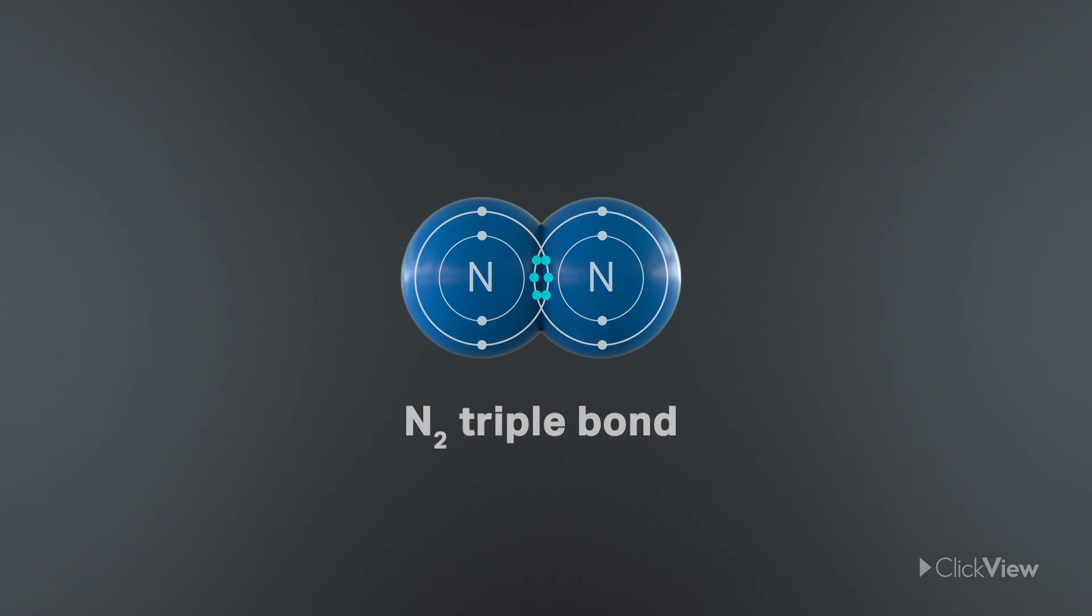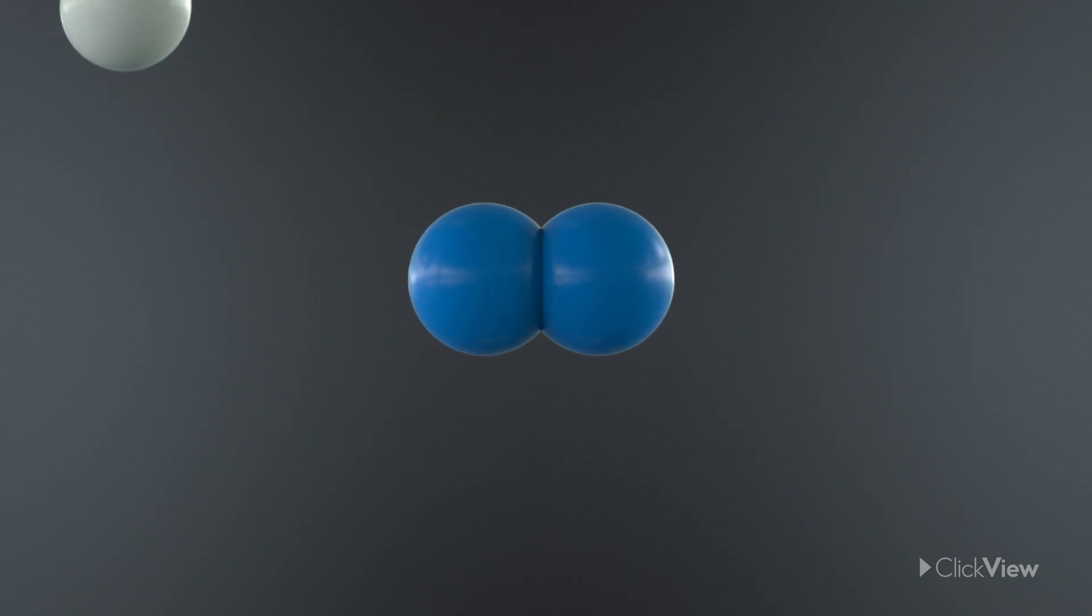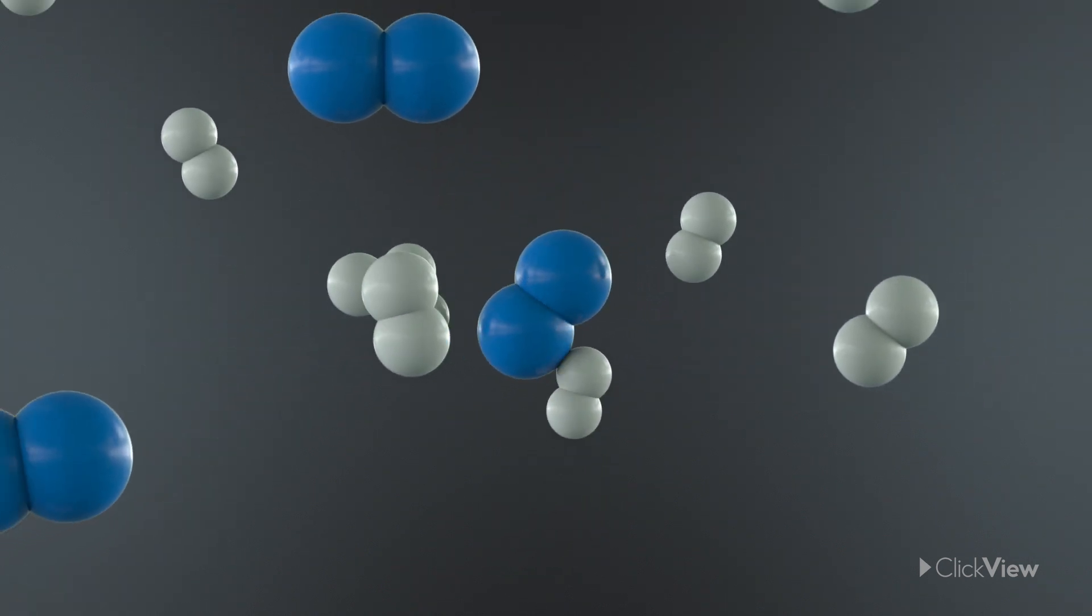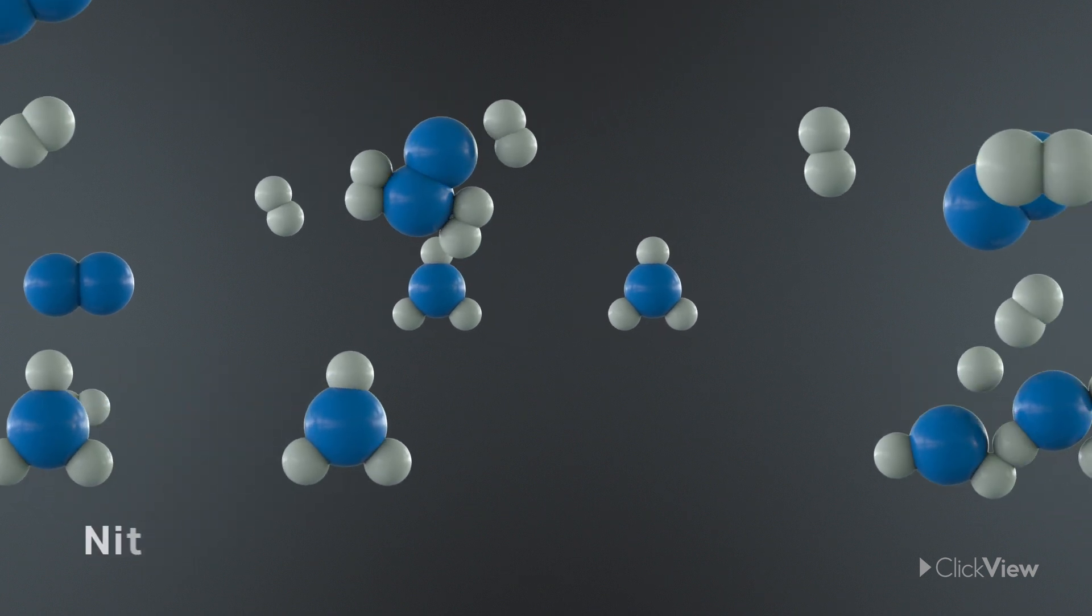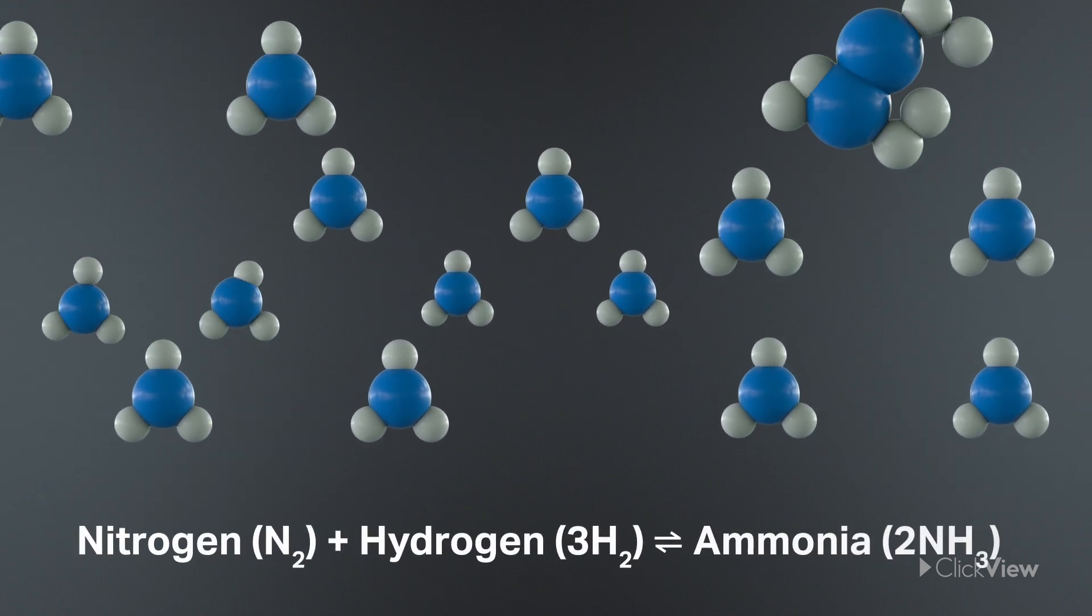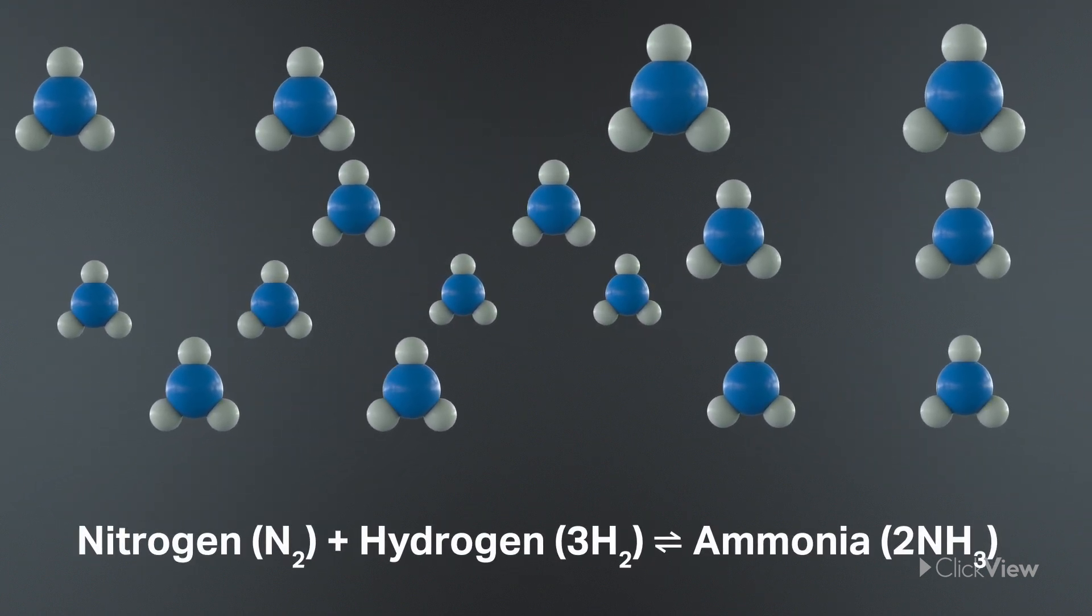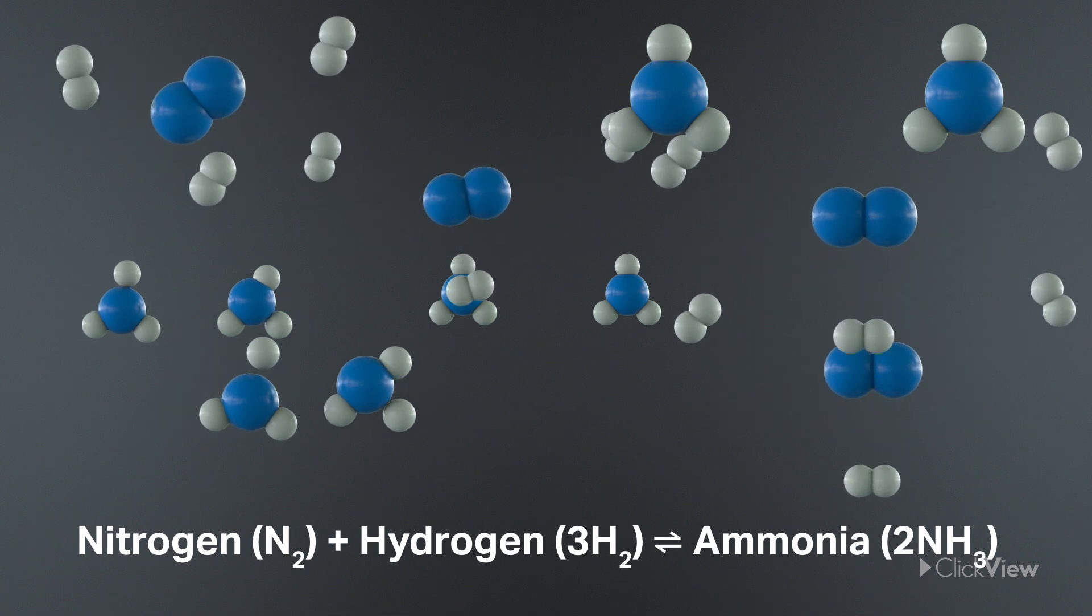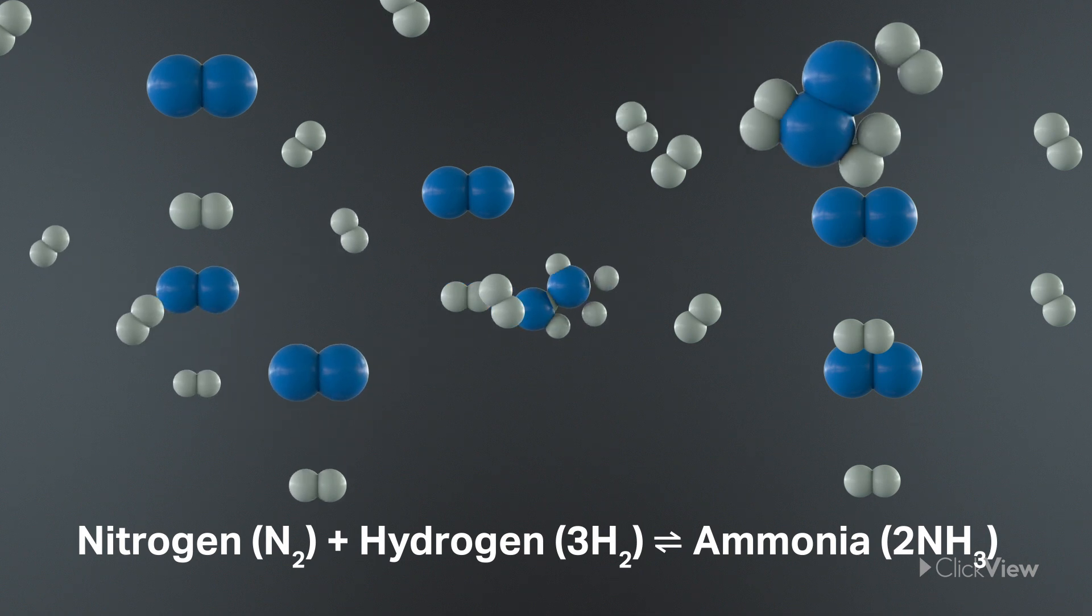Even if you can get the reagents to combine, there's the issue of equilibrium. Any ammonia they make will simply react to form hydrogen and nitrogen in a reverse reaction. Make enough ammonia and provide enough energy, the product will turn back into the starting materials like a cookie that unbakes itself.